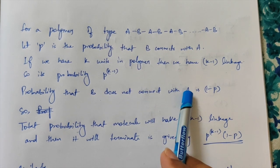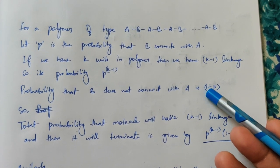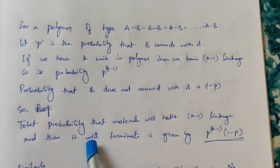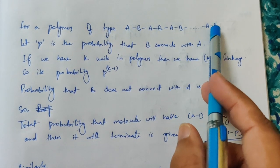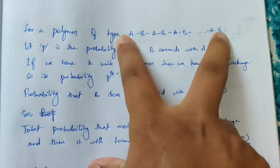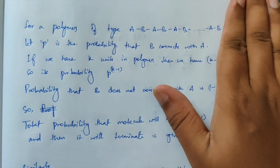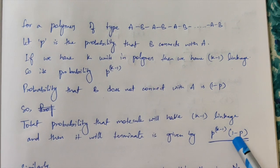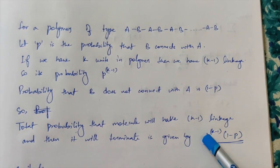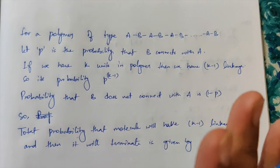The probability that B does not connect to A is one minus P, since P is the probability that B connects to A and one minus P is the probability it will not connect. The total probability that the molecule will have K minus one linkages and then terminate is P^(K-1) multiplied by (1-P), since both probabilities are dependent on each other.